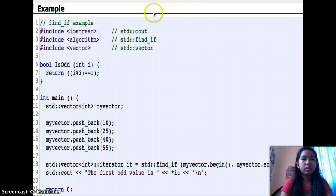Here is my example of find_if. Include iostream for cout, include algorithm for find_if, include vector for vector. bool isOdd int i, return i modulo 2 equals equals 1.